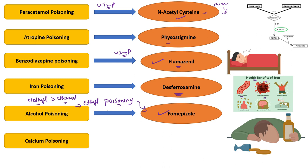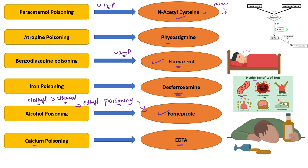For lead poisoning, we give EDTA. EDTA is a chelating agent. It forms a chelate with the metal, which stops the metal's absorption and facilitates its removal from the body.